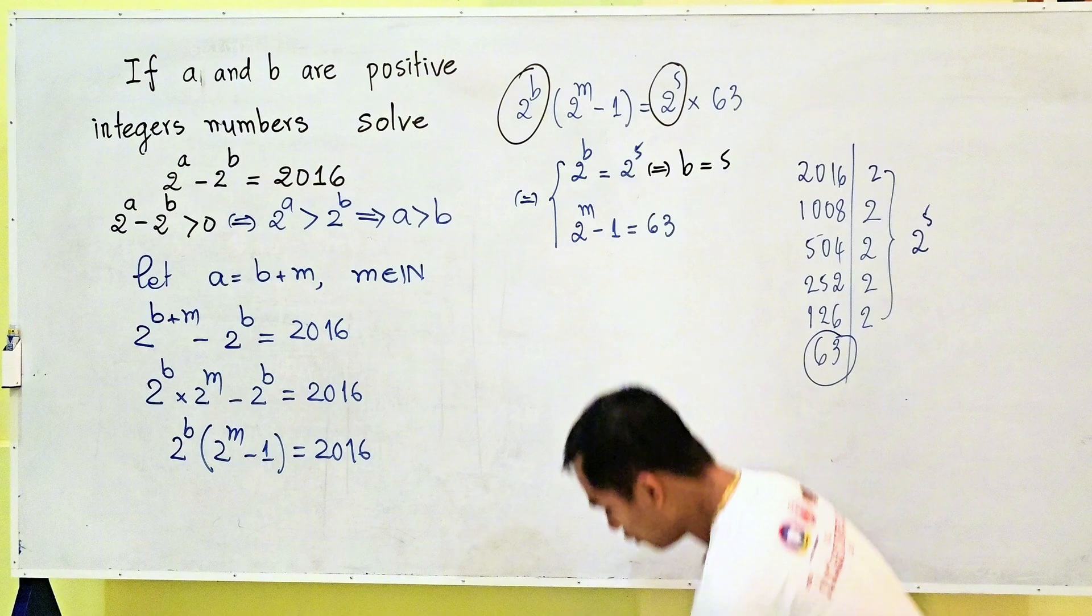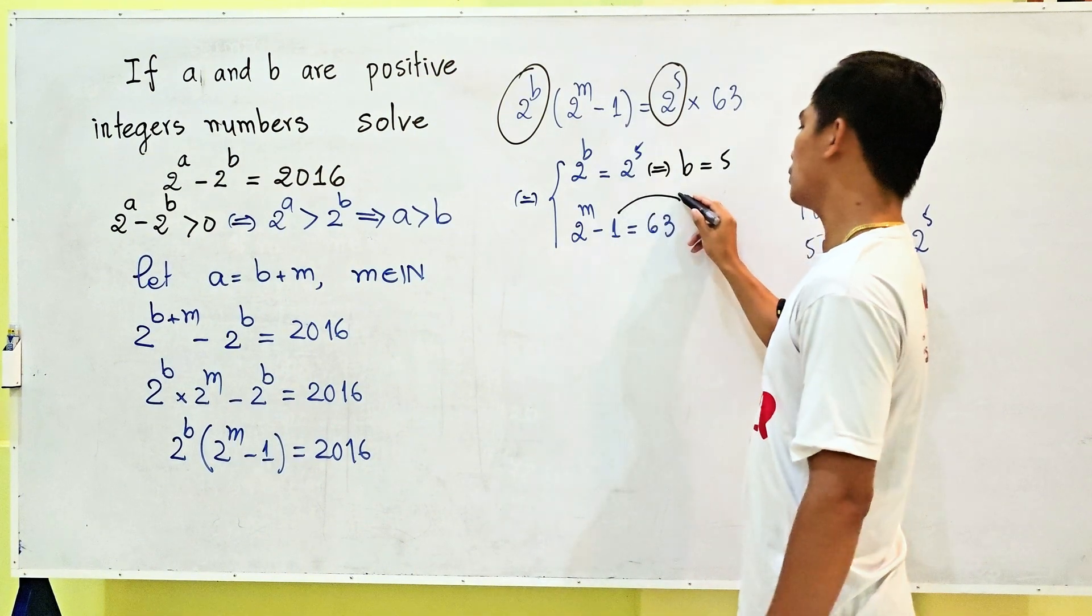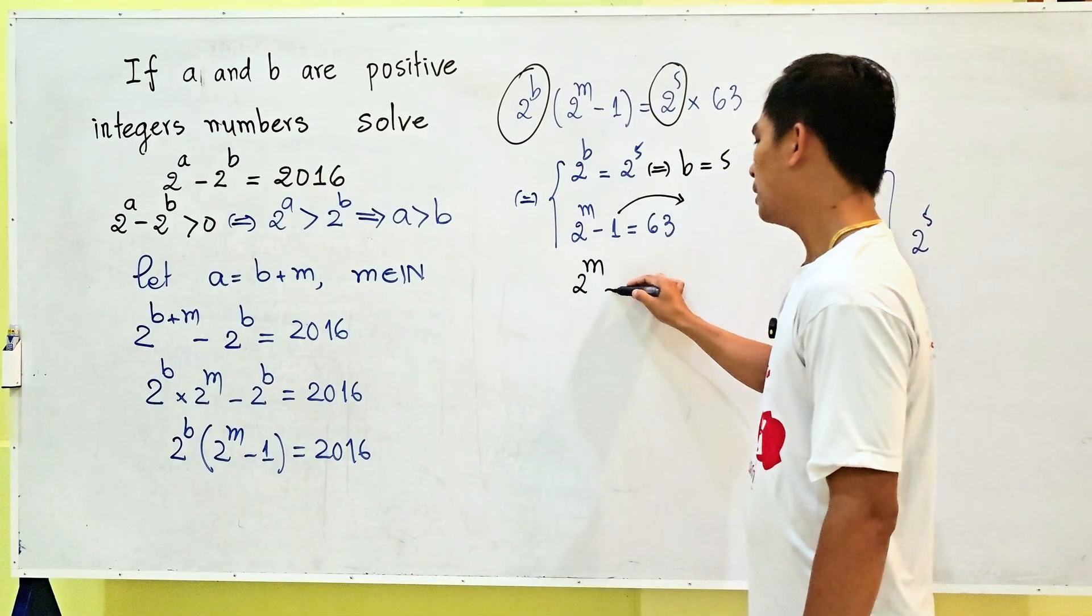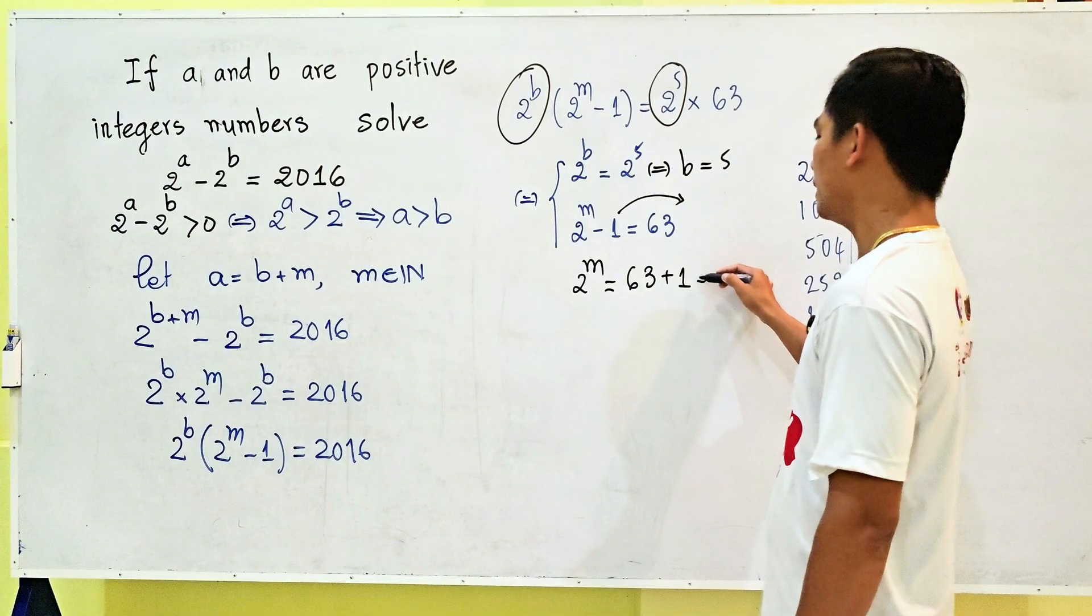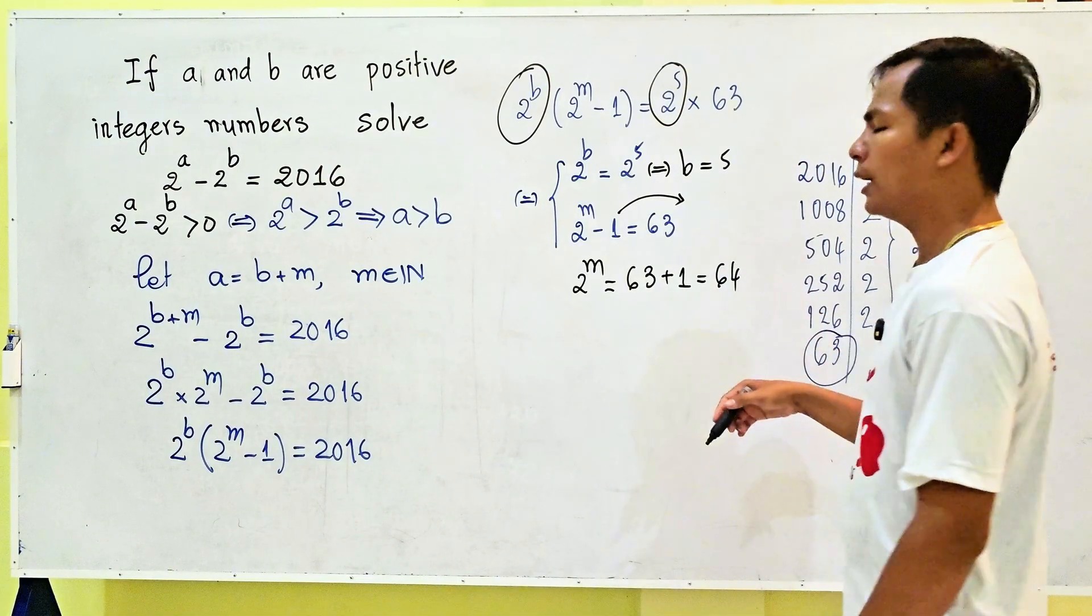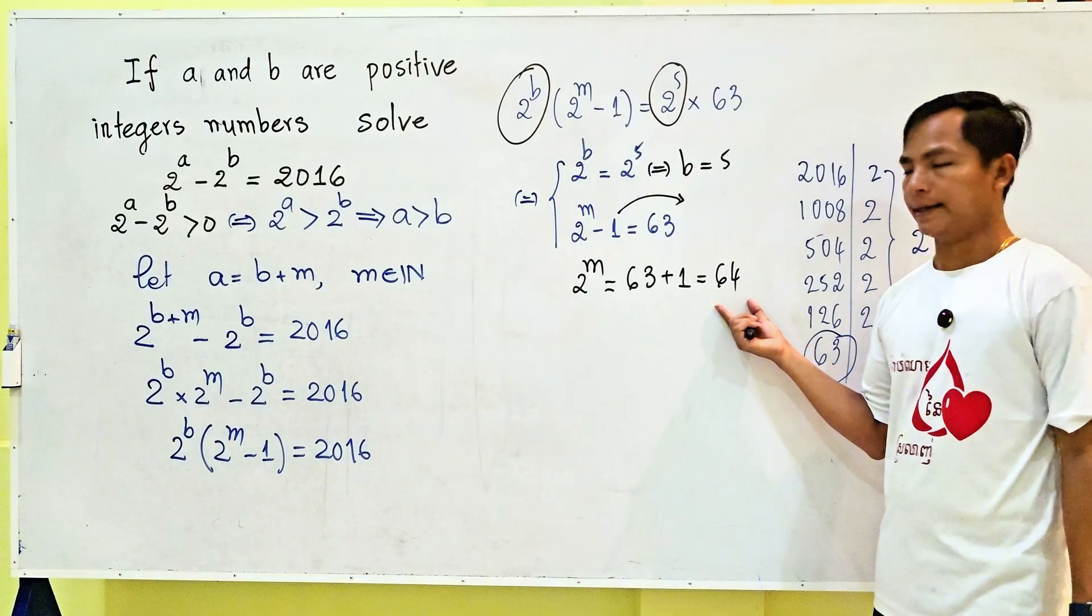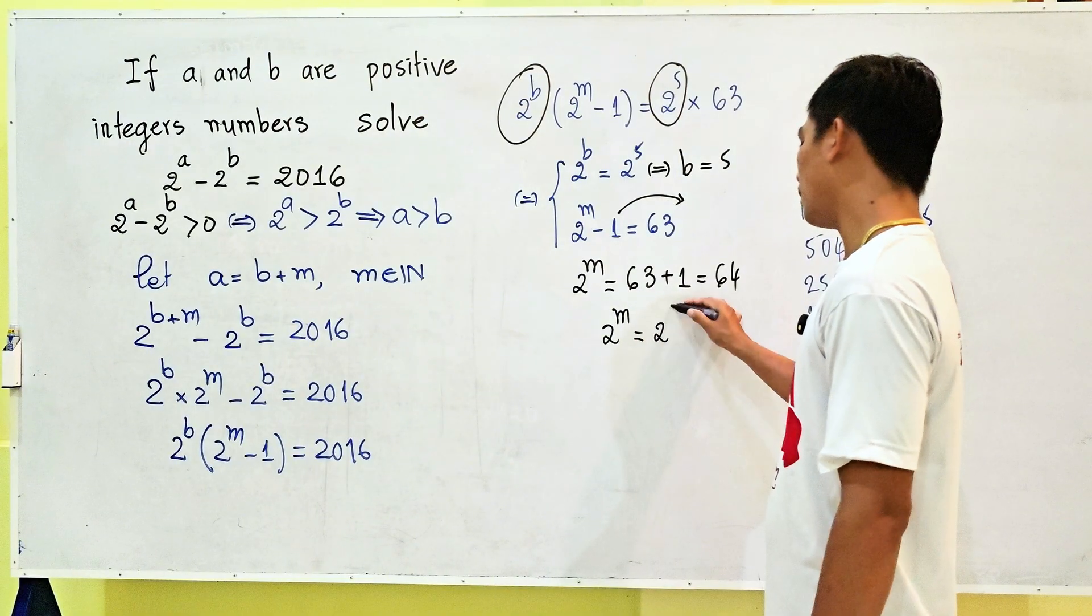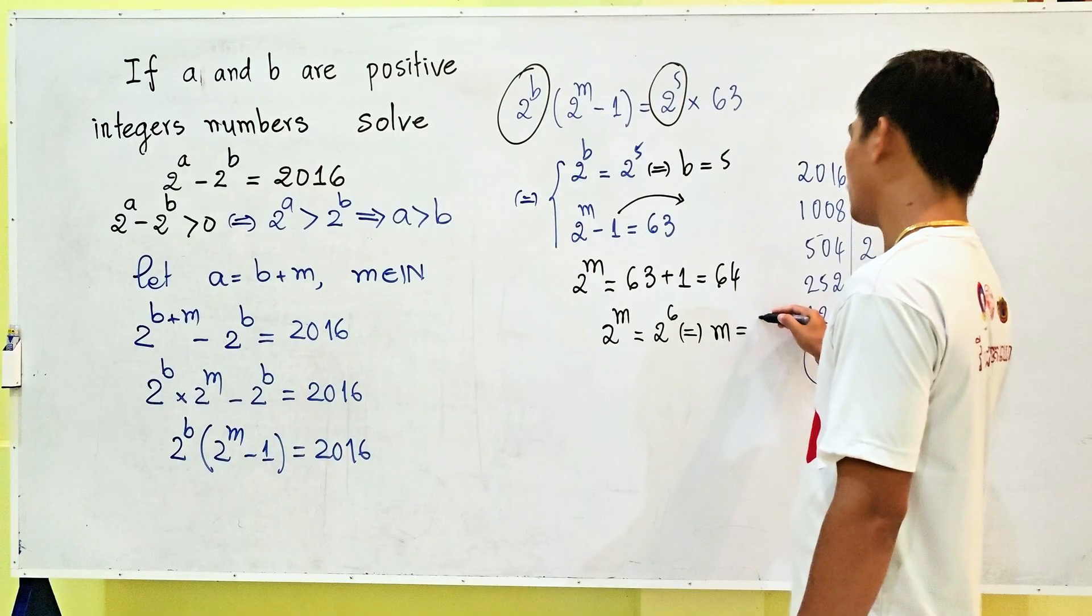Now let's find the value of m. Moving 1 to the right-hand side, we get 2^m = 63 + 1 = 64. Since 64 = 2^6, we get m = 6.